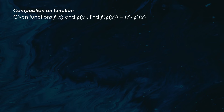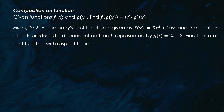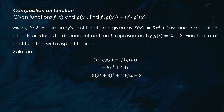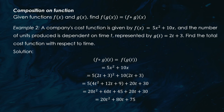Here's another composition example. A company's cost function is f(x) = 5x² + 10x, and the number of units produced depends on time t, represented by g(t) = 2t + 3. To find the total cost with respect to time, we compose f with g: f(g(t)) = 5(2t + 3)² + 10(2t + 3). When expanded and simplified, this becomes 20t² + 80t + 75. So the total cost function with respect to time is 20t² + 80t + 75.